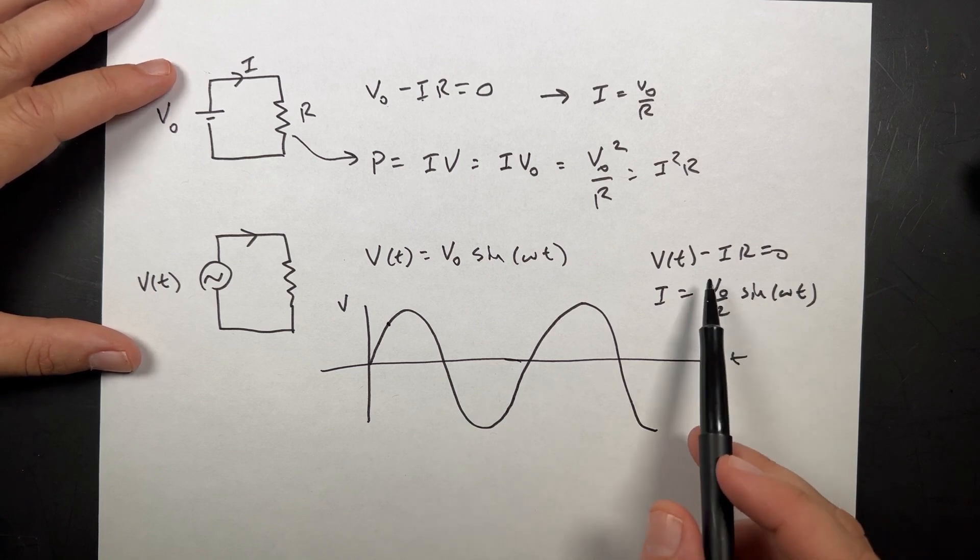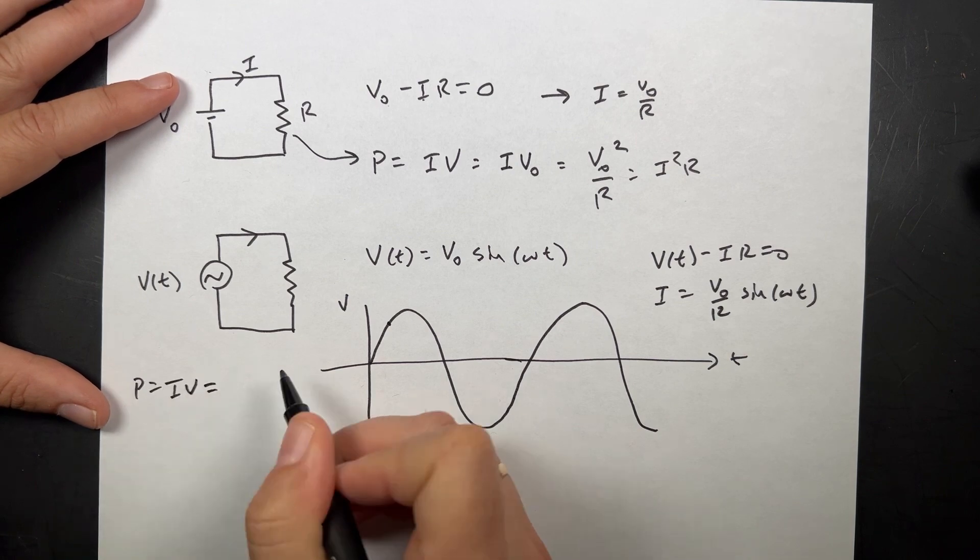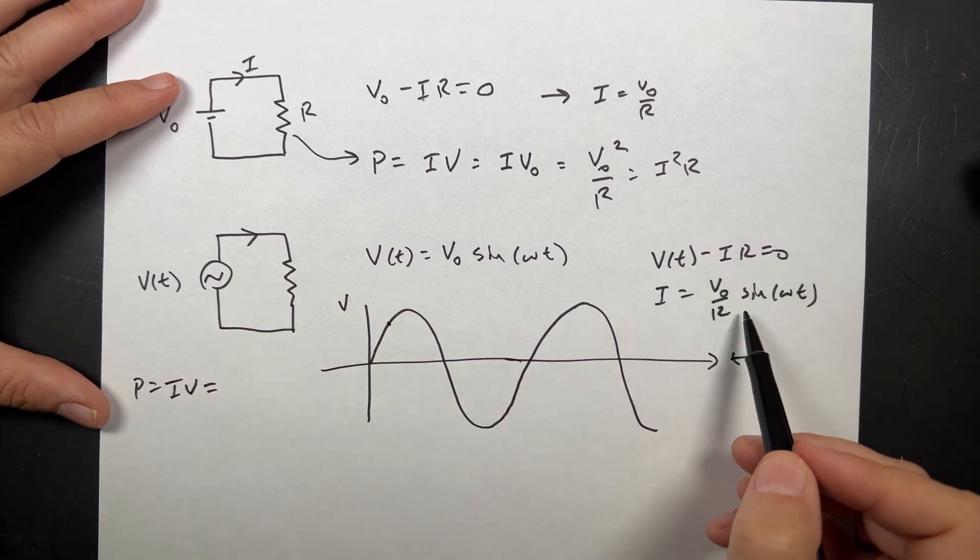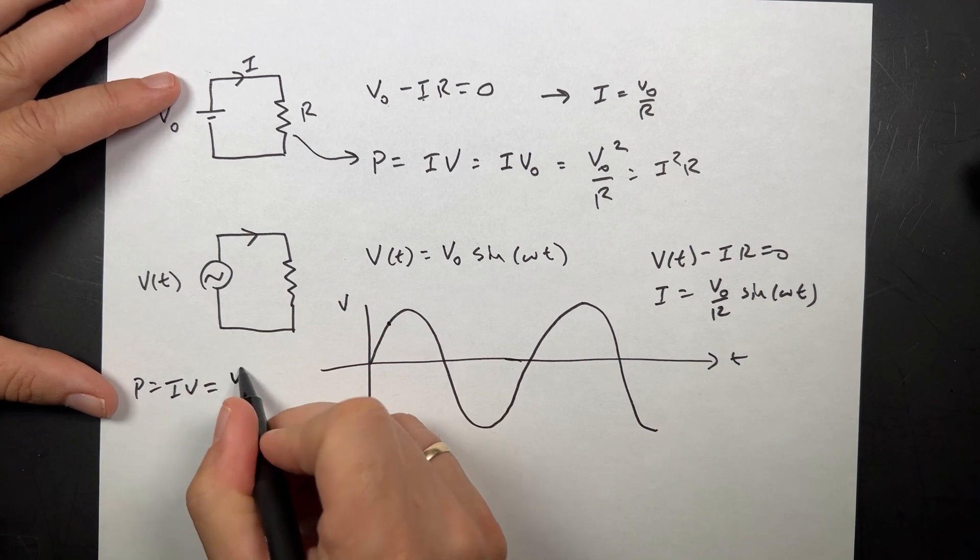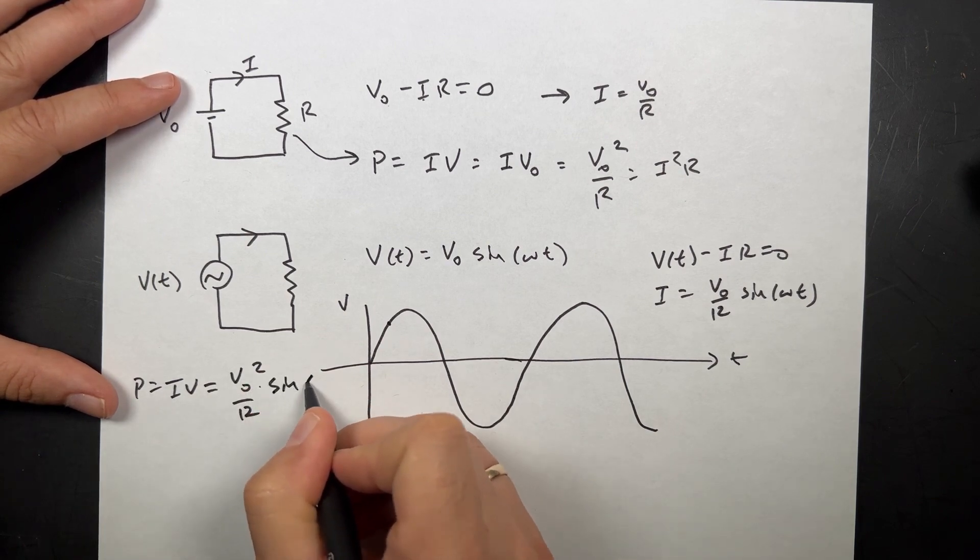So they both have the same function of time. They both have the sine omega T. Now, if I find the power, power is IV, that's just going to be this times this. I get V0 squared over R sine squared omega T.